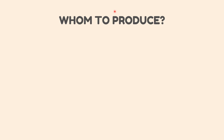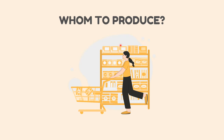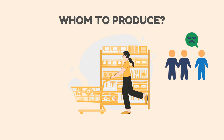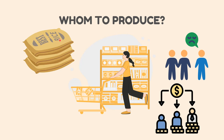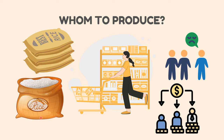The third and last question is: for whom to produce? This involves deciding who is the end consumer of the goods or services that are produced. Every good produced is made for a specific section of society, as every product cannot satisfy all sections due to differences in the paying capacity of the consumer. Inequality in the distribution of income causes differences in paying capacity. For example, graded rice is for people with higher paying capacity, and non-graded rice is for lower-income people.